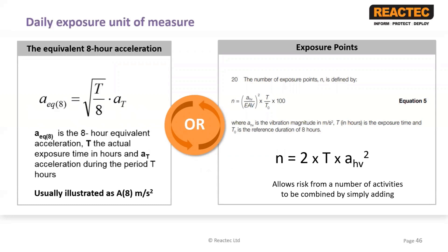As a reminder, to measure exposure to hand-arm vibration requires a combination of two factors and it can be expressed in two different units of measure. Daily exposure to vibration can be expressed in the equivalent eight-hour acceleration, that is an A8 in meters per second squared, or it can be measured in exposure points.